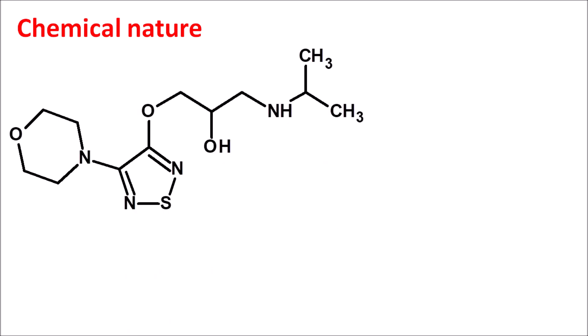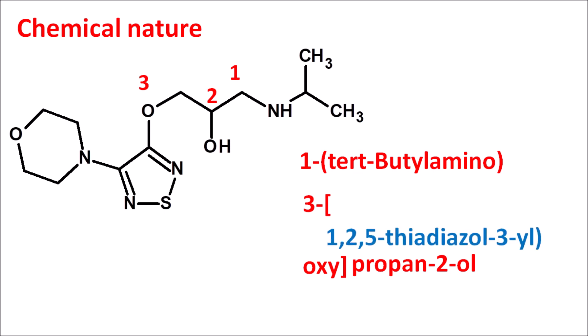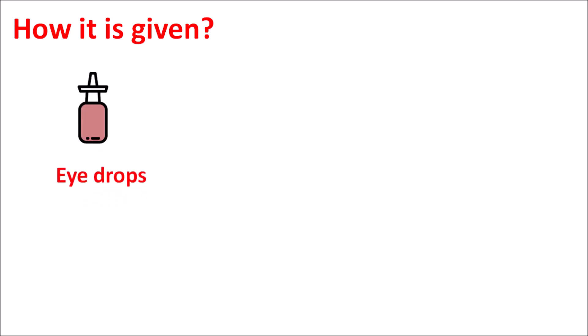Now let us look at the chemical structure of timolol. It contains a propanolamine moiety. Numbering the chain as 1, 2, 3 gives us the suffix 'propan-1-ol'. At position 1 it has an amine moiety with a tertiary butyl group: '1-(tert-butylamino)'. At position 3 it has an oxy group attached to a heterocyclic ring containing two nitrogens and one sulfur, which is a 1,2,5-thiadiazole attached at position 3: '(1,2,5-thiadiazol-3-yl)oxy'. At position 4 it has a morpholino system: '4-morpholino'.